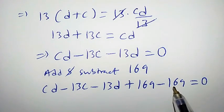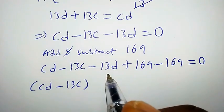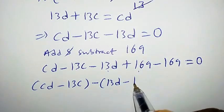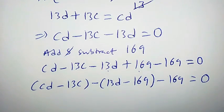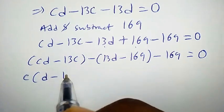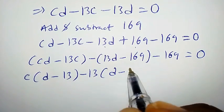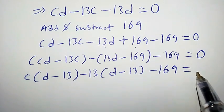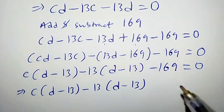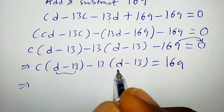Nothing has changed because 169 minus 169 gives 0. We can put these two guys in brackets, so we have cd minus 13c. Now let us consider the next two terms. If we pull out a negative sign, we get minus into 13d minus 169, minus 169 equals 0. You will notice that we can pull out c from the first group.